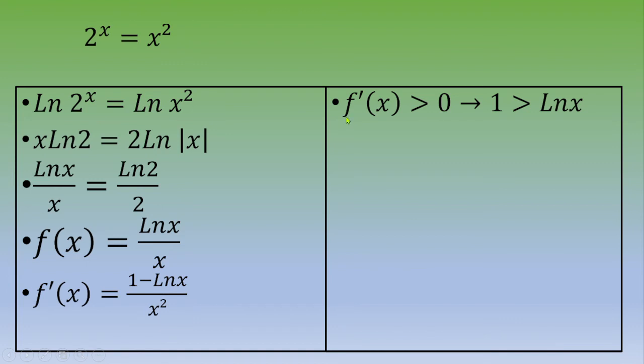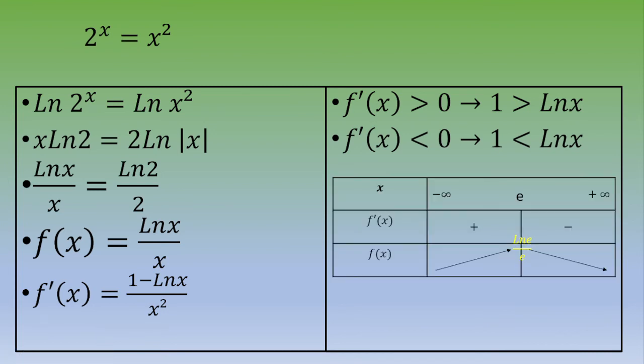So then you can end up with the derivative f'(x) is strictly positive when the natural log of x is below 1, and the derivative f'(x) is strictly negative when natural log of x is greater than 1.